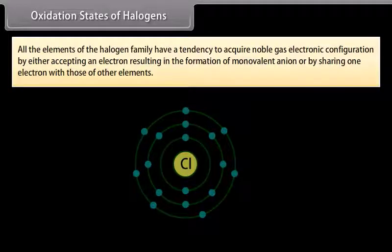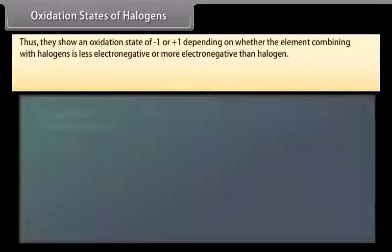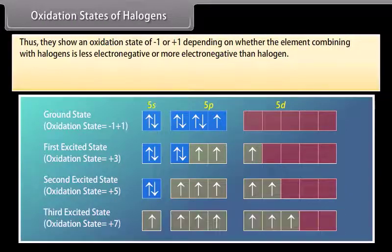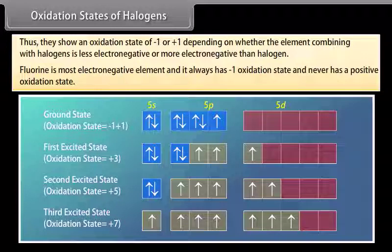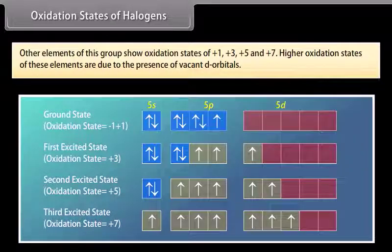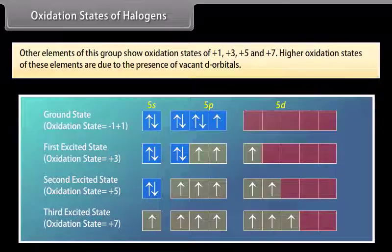Oxidation states of halogens: All halogen family elements have a tendency to acquire noble gas electronic configuration by either accepting an electron, forming a monovalent anion, or by sharing one electron. They show an oxidation state of -1 or +1. Fluorine is the most electronegative and always has a -1 oxidation state, never positive, and higher oxidation states are not possible as it lacks vacant d-orbitals. Other elements show oxidation states of +1, +3, +5 and +7 due to the presence of vacant d-orbitals.